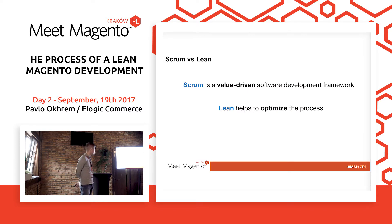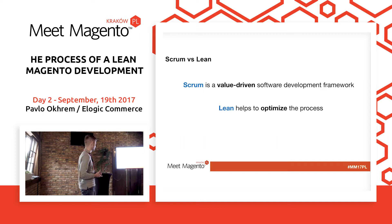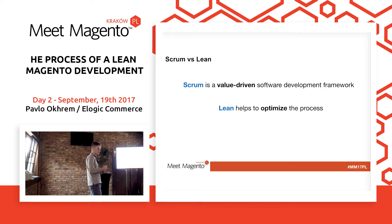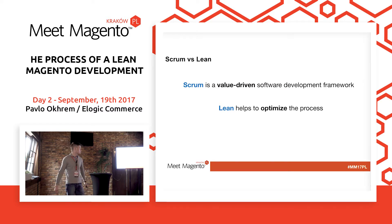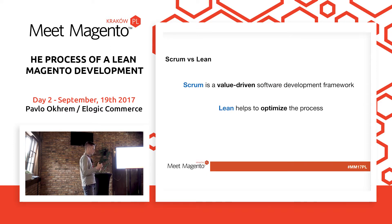Some people think that Scrum should be considered versus Lean, but in our case we just took something that is really valuable from the Scrum approach and from the Lean approach. It very much depends on the size of the project, because for some cases when the projects are really small, it's not smart to implement it. But in general, for big projects where you want to achieve top quality and see the overall result which satisfies the end customer, you have to implement Lean.